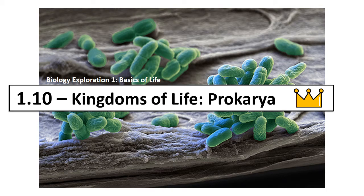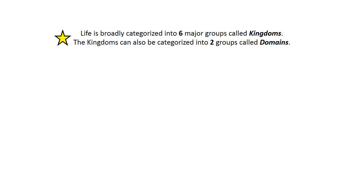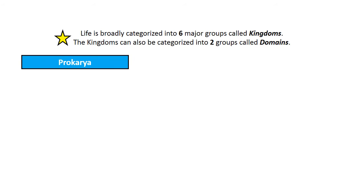Welcome to Biology Exploration 1.10: Kingdoms of Life - Prokaryotes. In order to understand the next three videos, you need to understand that life is categorized into six big groups. When we find a living thing, we can place it in one of these six groups, which we call kingdoms. We can even take those kingdoms and put them into two major groups called domains.